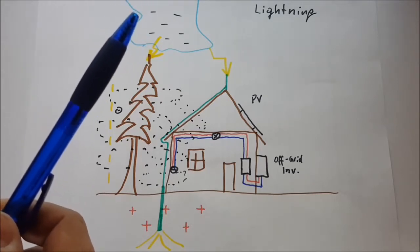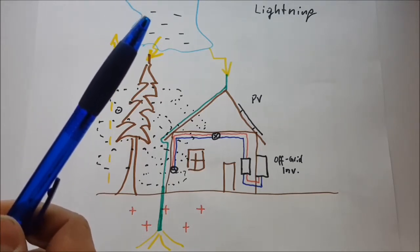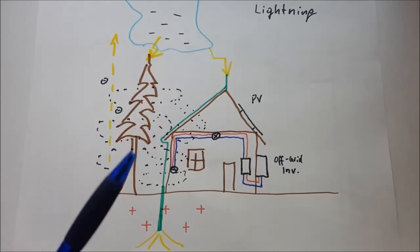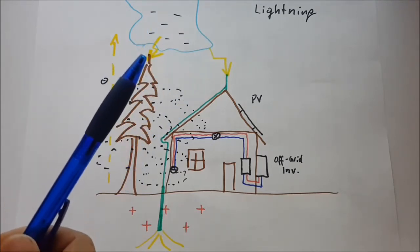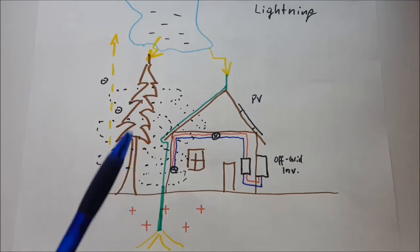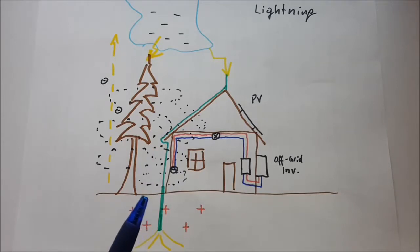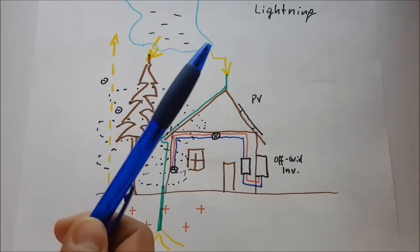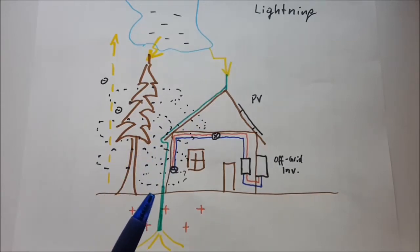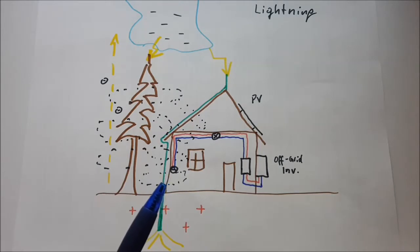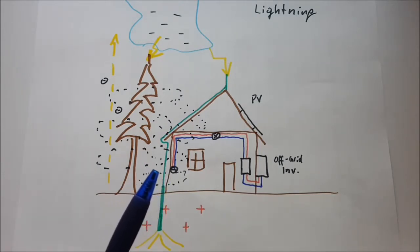The current will either travel through the tree to earth or through our lightning arrestor to earth. The problem now is what happens when current is traveling nearby wiring. Whenever a current is flowing somewhere, in our case now we are talking about the lightning current, and in the case of lightning it's a very high current.